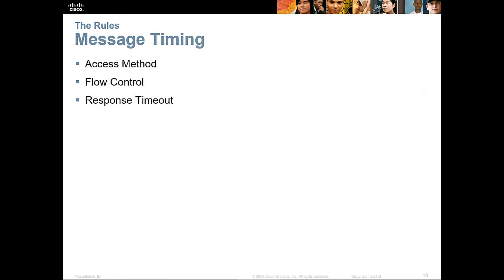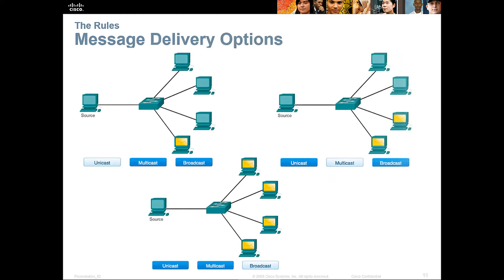Other ways for message timing include an access method, flow control, or response time — all dealing with the timing of our messages. For delivery options, we have three different types: unicast, multicast, and broadcast. Broadcast is one-to-all, multicast is one-to-many, and unicast is one-to-one.